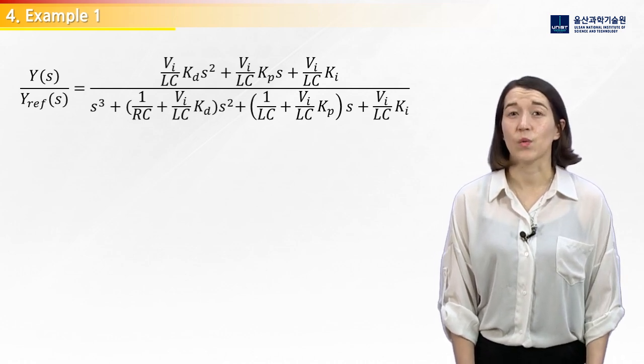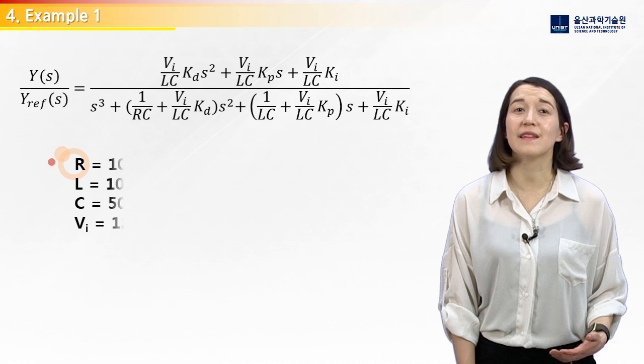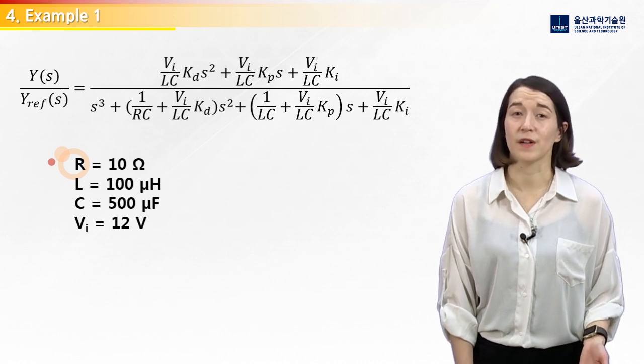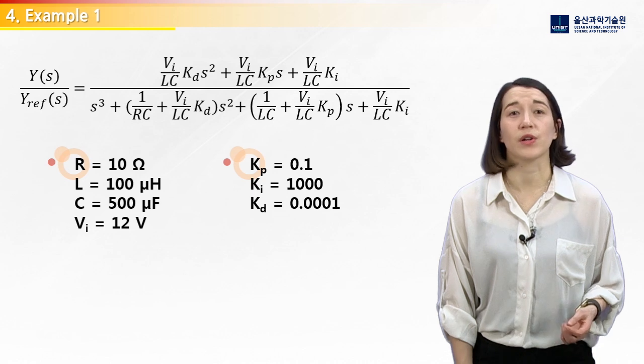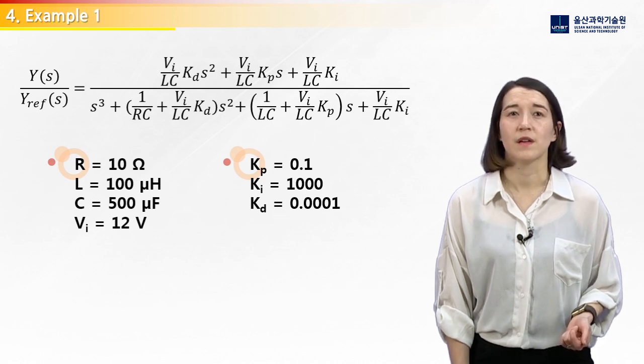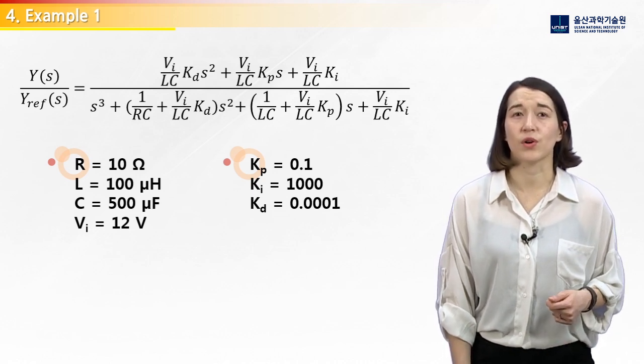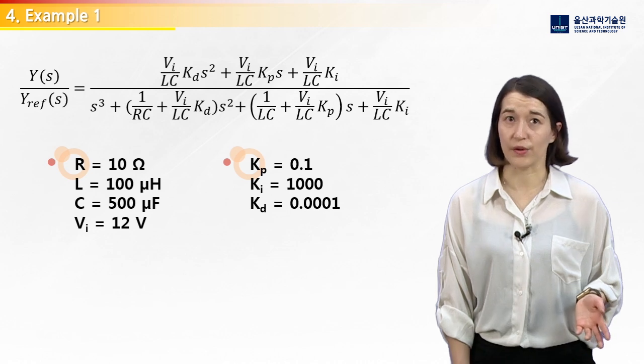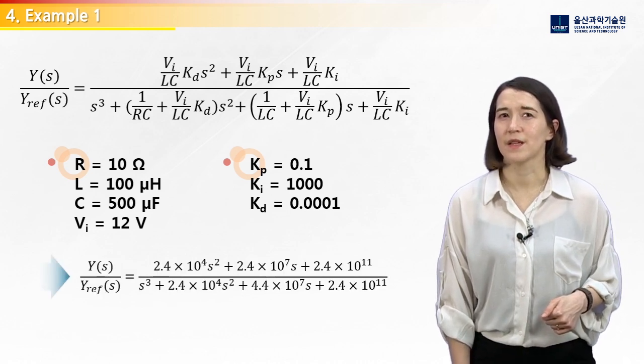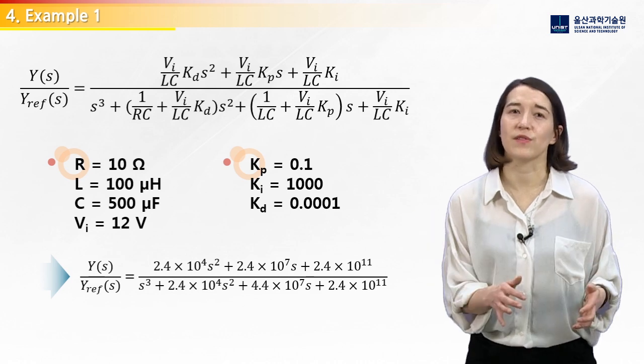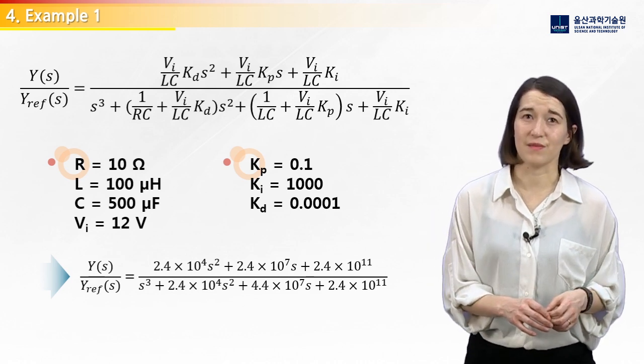Let's say we pick these example values for the buck converter values and these values for the controller coefficients. Our integral control coefficient here is larger than the others, and the derivative control coefficient is relatively small. If we plug in these values, we get this transfer function.